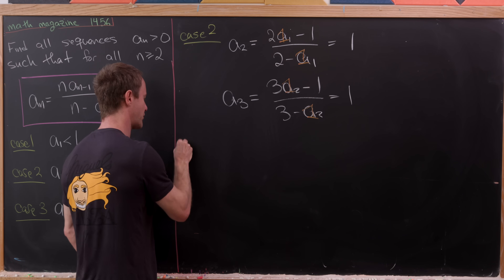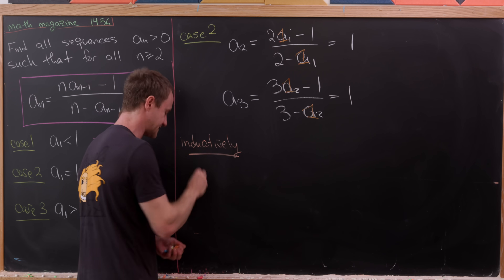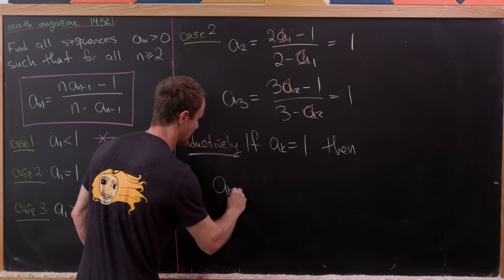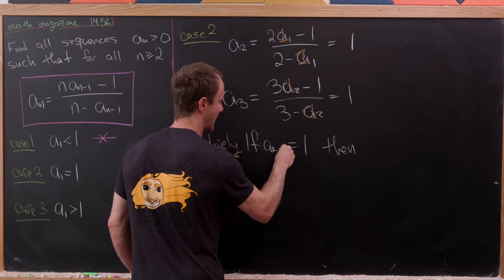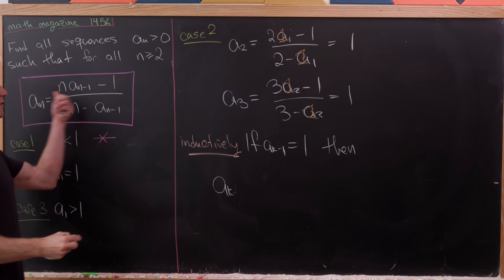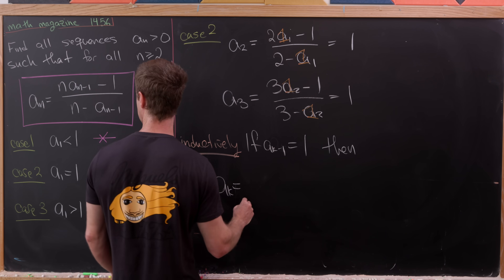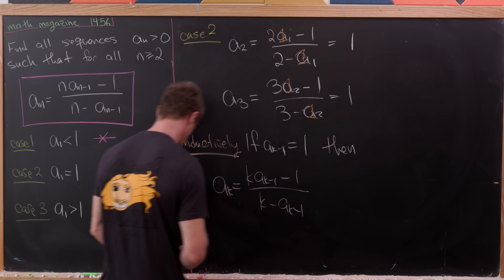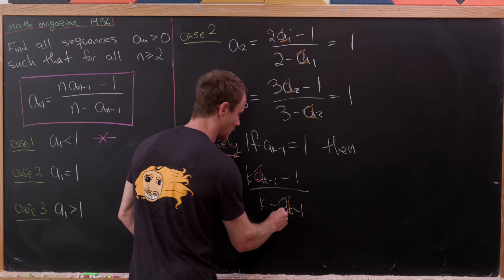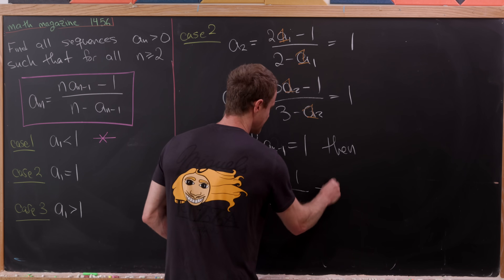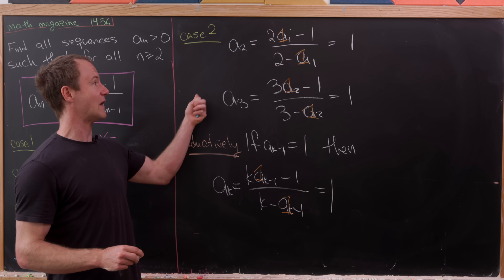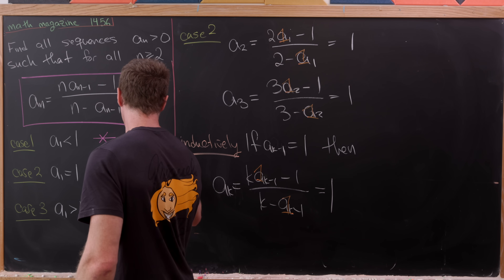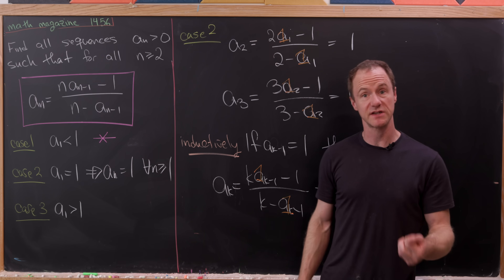This sets up a clear induction. If aₖ₋₁ = 1, then aₖ = (k·aₖ₋₁ - 1)/(k - aₖ₋₁) = (k - 1)/(k - 1) = 1. So if a₁ = 1, then by induction aₙ = 1 for all n ≥ 1. The constant sequence aₙ = 1 is a valid solution.